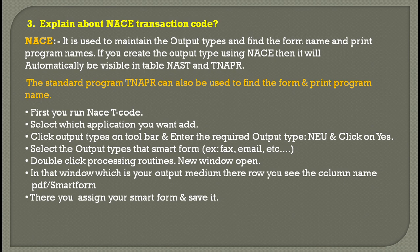Then you click the output types on the toolbar, enter the required output type like 'NEU', and click yes. You select the output type — it could be a printout, fax, email, or whatever. Then you double-click on the processing routines, and a new window opens. In that window, representing your output medium, you would have rows and columns for PDF and Smart Form. Here you assign your Smart Form and save it. This is how you work on the NACE transaction code.